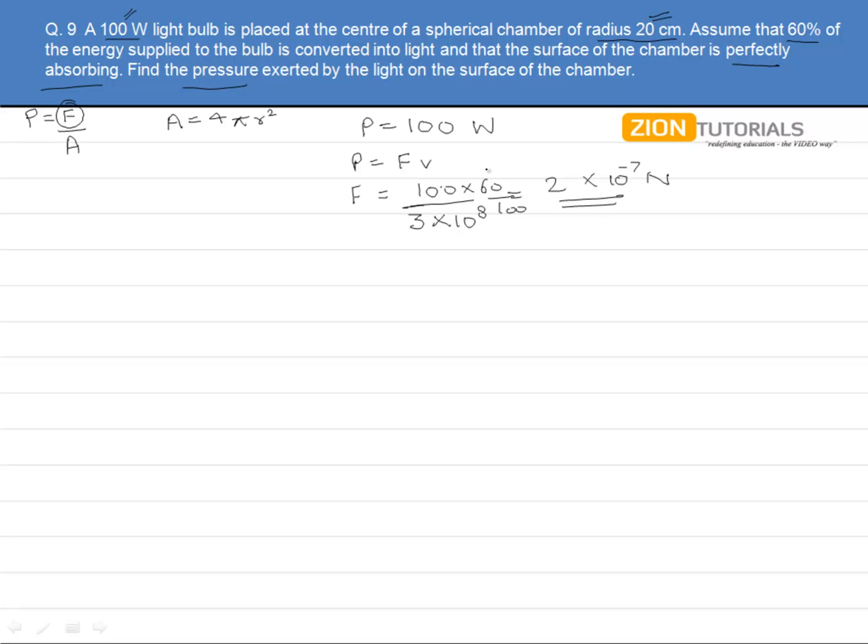Why did we multiply by 60/100? Because we have been given the efficiency to be 60 percent. So it was 60 percent of 100. That is the actual power upon velocity, which is 3×10⁸. This gives us the force to be 2×10⁻⁷ newtons. So this is the force being applied on the surface of the chamber, and this is the area.